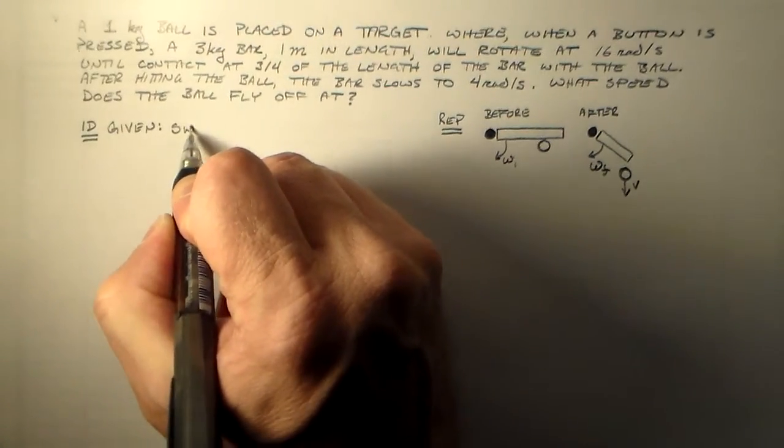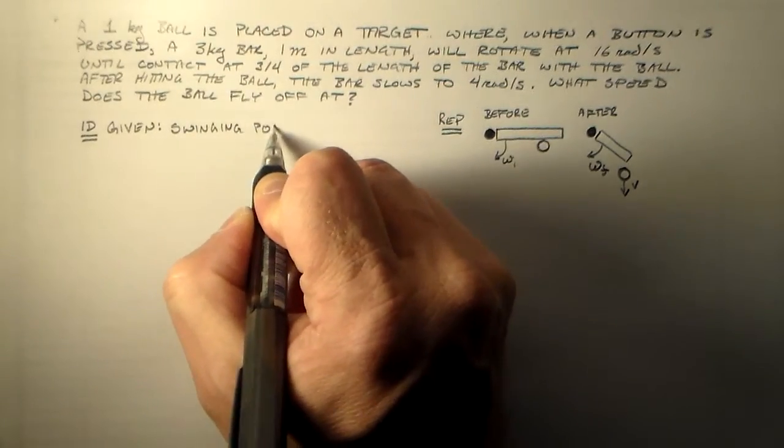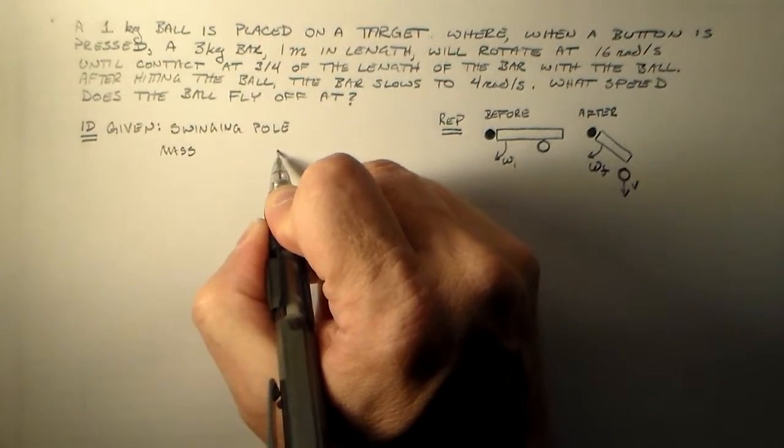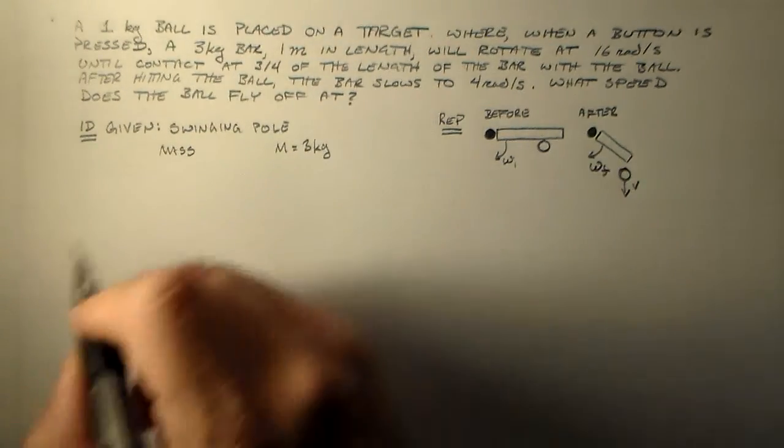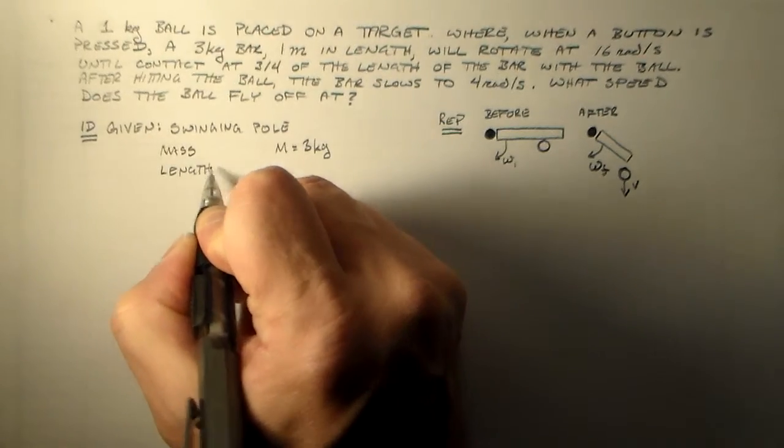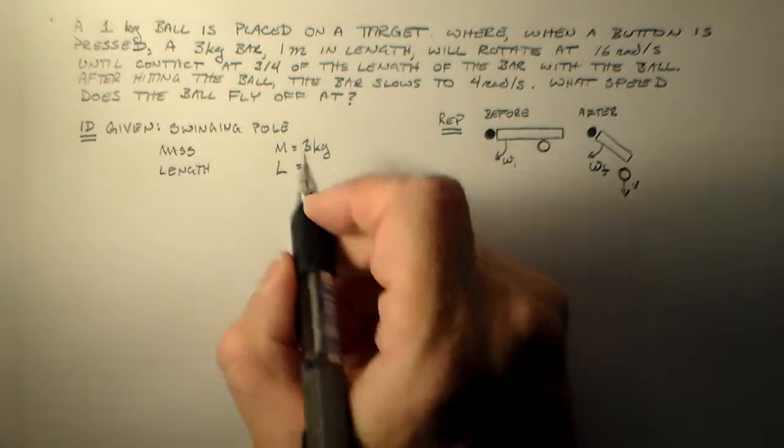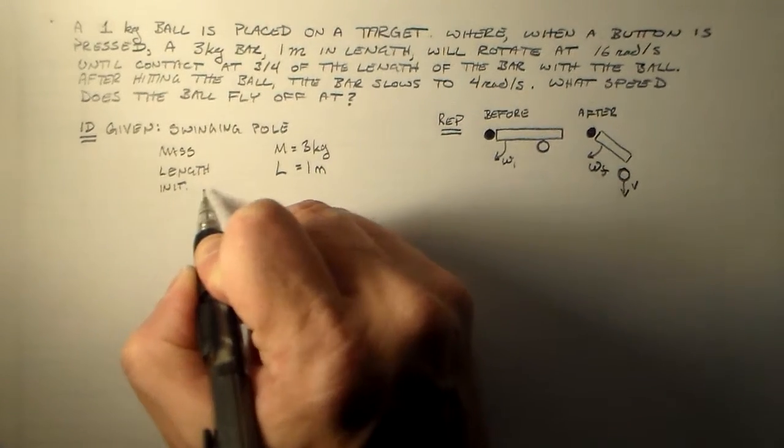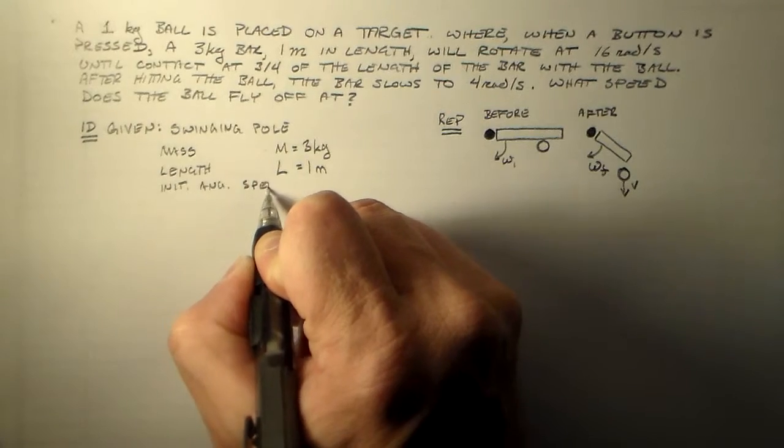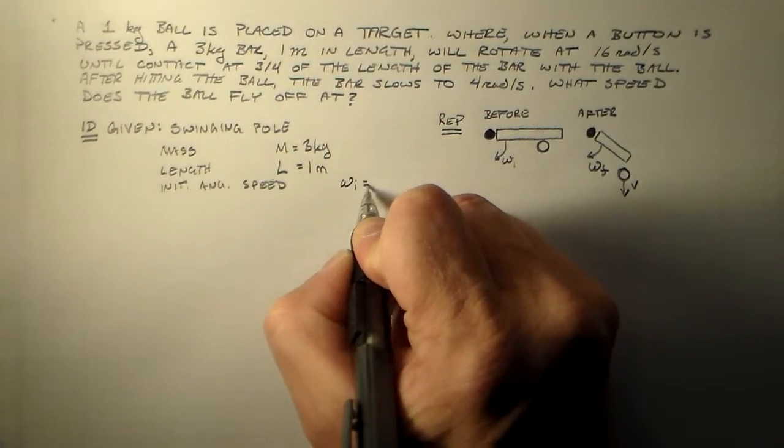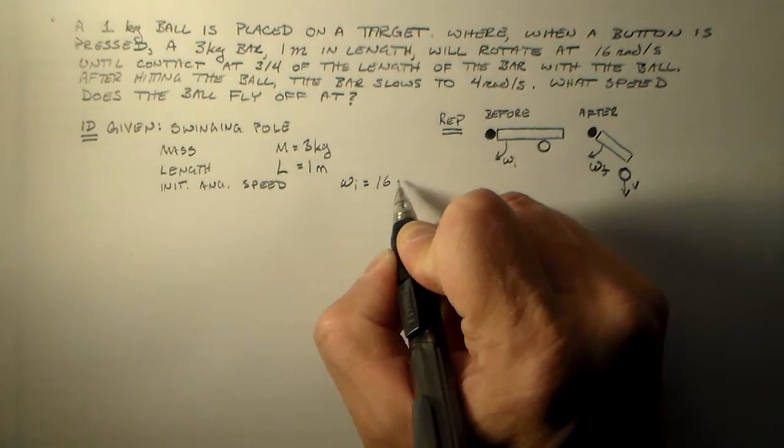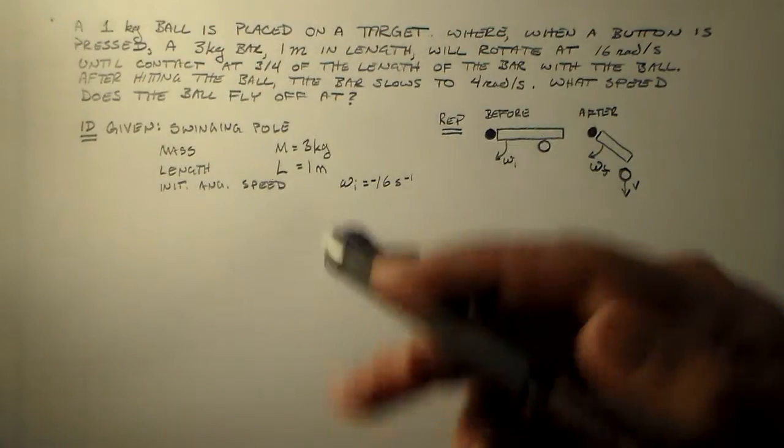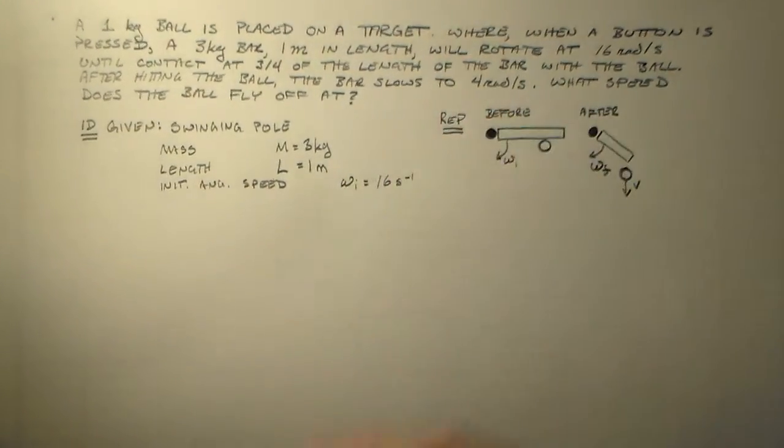So let's identify the parts of the problem. We start with a swinging pole. And that swinging pole has some mass. Let's call that mass m equals three kilograms. And we have some length l, and that was one meter in the problem statement. We have an initial angular velocity omega i, which is 16 radians per second. It's a speed. We probably really do need the minus sign in the direction, don't we?